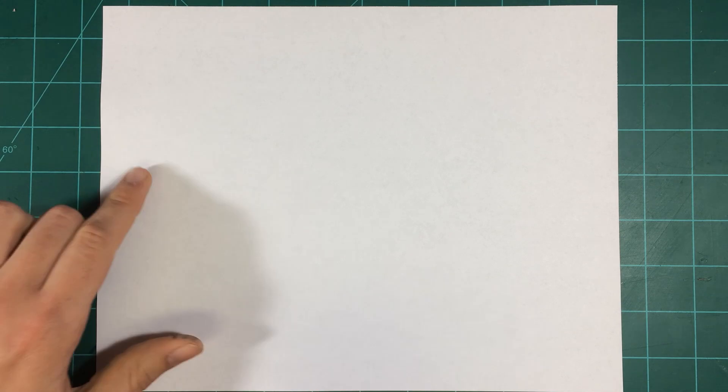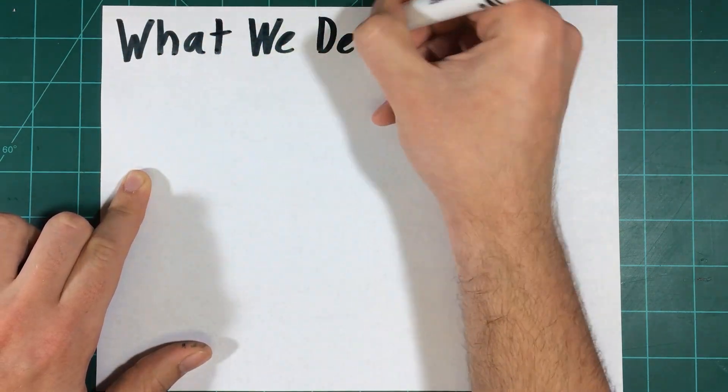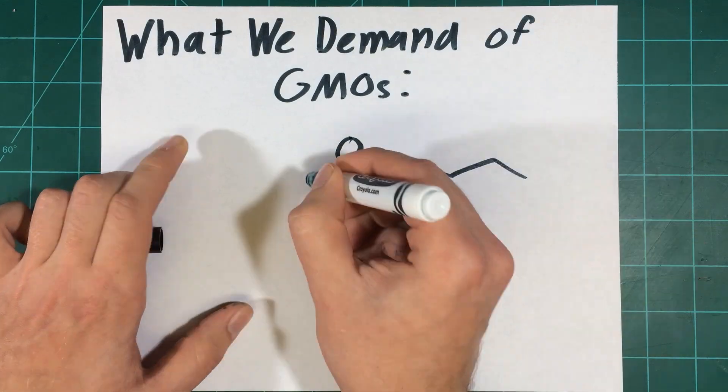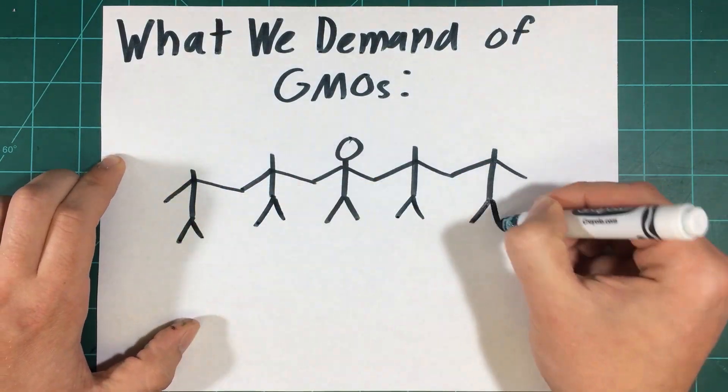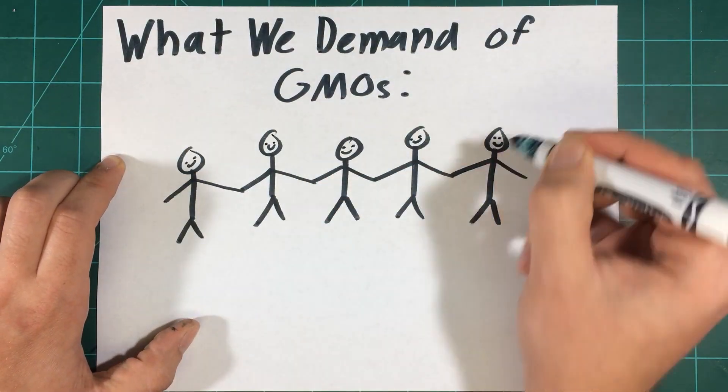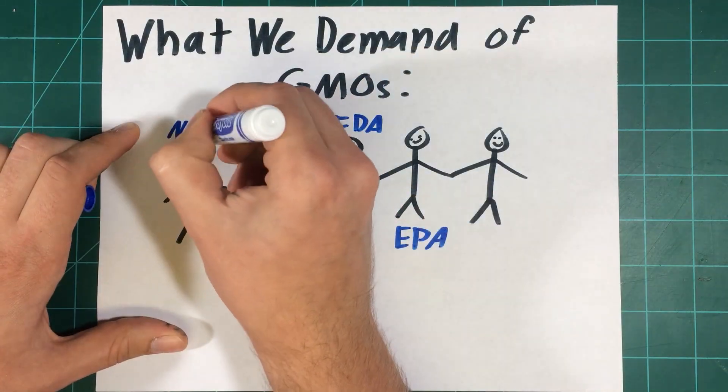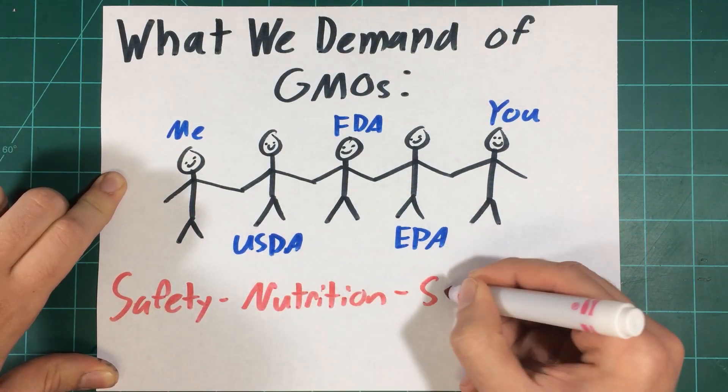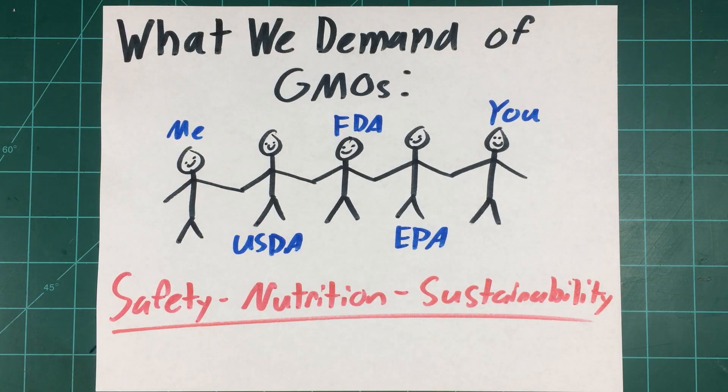It is always good to express a healthy amount of skepticism when it comes to the production and regulation of GMO products. We as consumers need to constantly demand that these products be safe, nutritious, and sustainable. All of these government agencies work together to regulate GMOs to do just that so that we can continue to develop the tools that we will need to feed the future population of the planet.